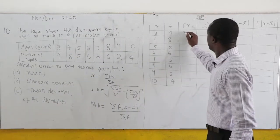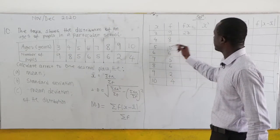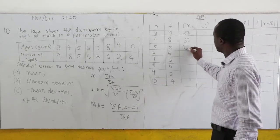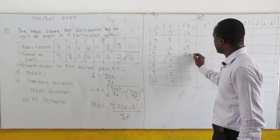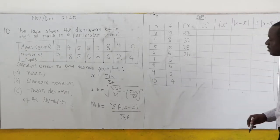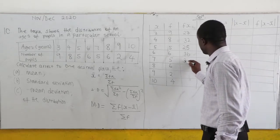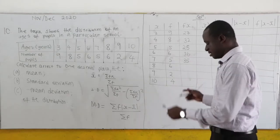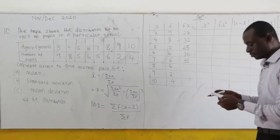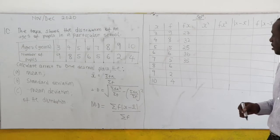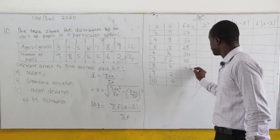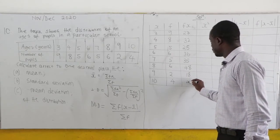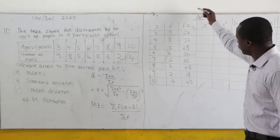Now we calculate fx: 3×9 = 27, 4×8 = 32, 5×5 = 25, 6×6 = 36, 7×5 = 35, 8×6 = 48, 9×2 = 18, 10×4 = 40.